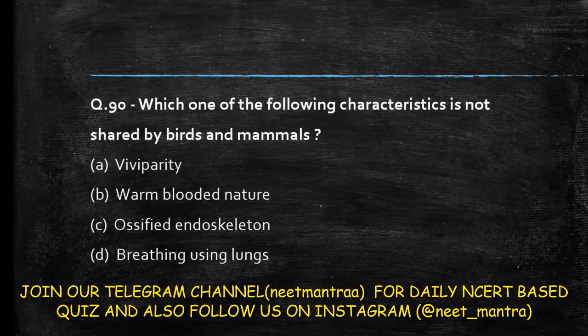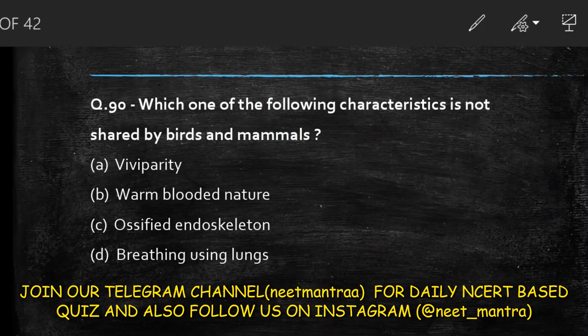Next question: which one of the following characters is not shared by birds and mammals? Options are viviparous, warm-blooded nature, ossified endoskeleton, breathing using lungs. Warm-blooded nature, ossified endoskeleton, and breathing using lungs are common to both. Birds are oviparous while mammals are viviparous. So the answer is option A: viviparous.